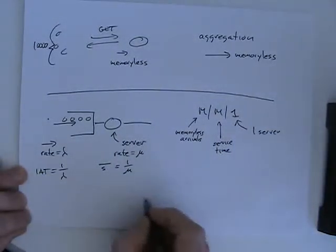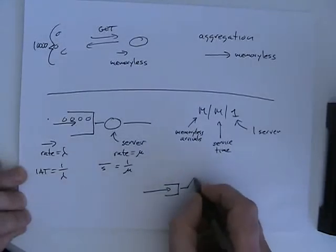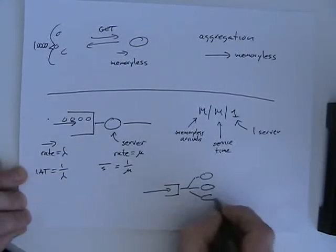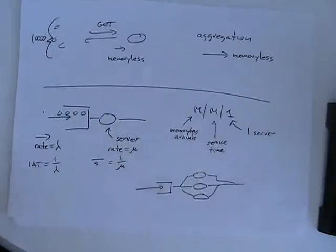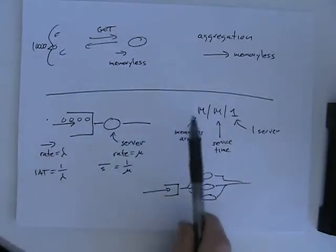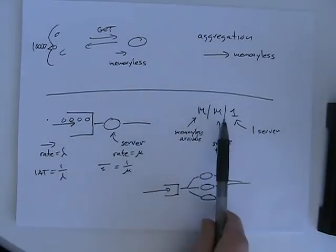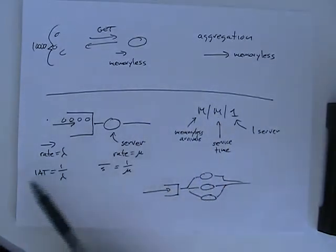We'll look at MM1 queues — memoryless arrivals, memoryless service time, and 1 server. You can also have queues with multiple servers, like a single line for multiple bank tellers. Things get much more complicated once you move to non-memoryless distributions; general interarrival time and service distributions are hard.